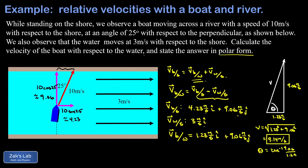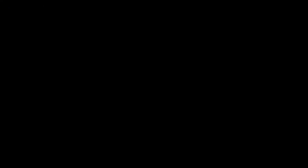divided by 1.23, giving an angle of about 82.3 degrees. Now, in the original picture the angle was labeled with respect to the vertical, so we may want to express the final answer that way as well. We put in a reference vertical and call that angle phi, where phi = 90° − θ = 90° − 82.3° = 7.7 degrees.